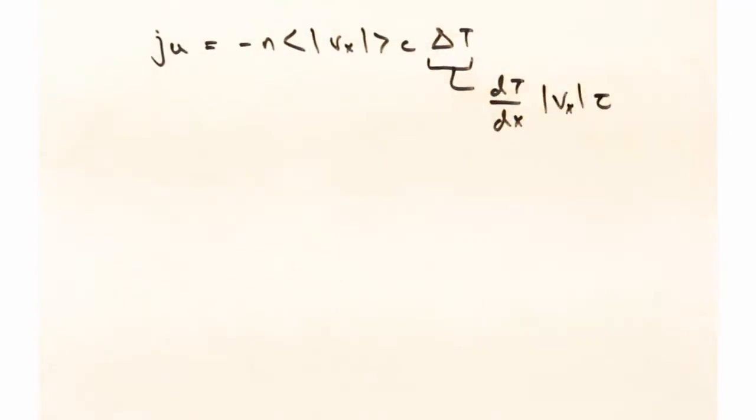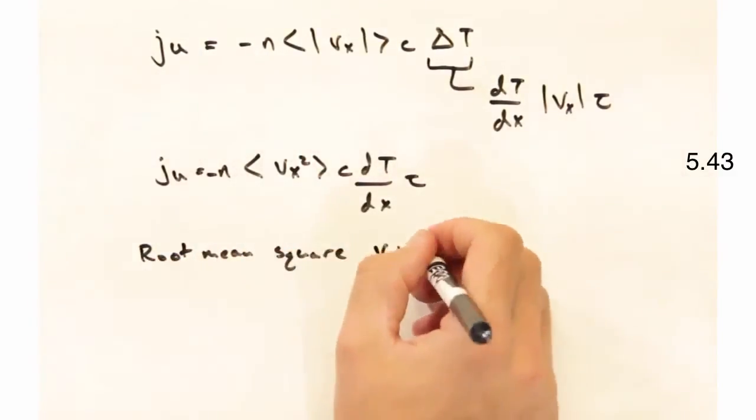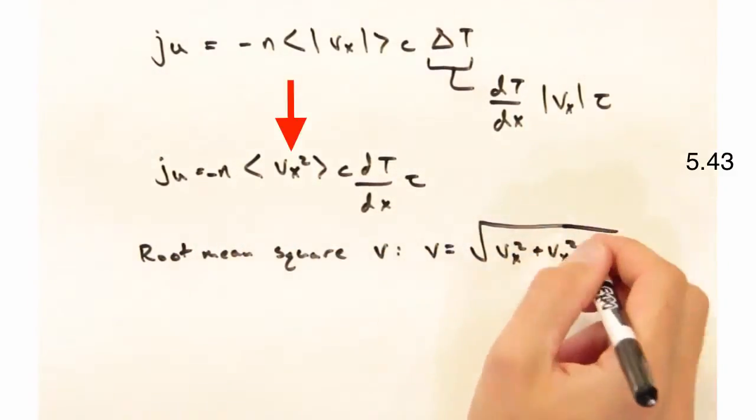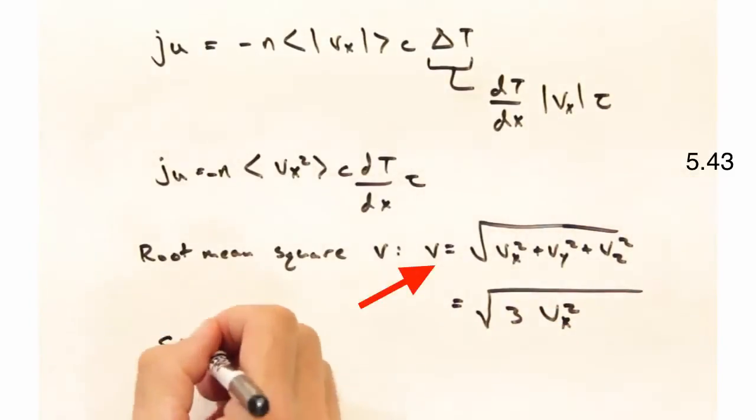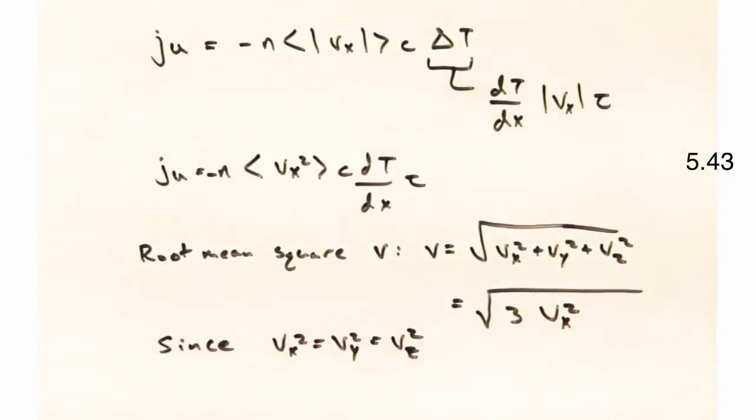Substituting this back into our energy flux expression, we get the following. The first term we're going to pick out here is this v sub x term. Let's put that instead in terms of the root mean square velocity v. On average, we expect the x, y, and z components of the velocity to be equal.